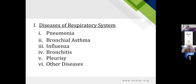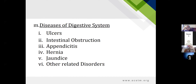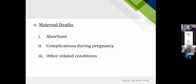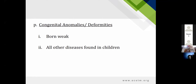In the respiratory system, the most common in the region are pneumonia, bronchial asthma, influenza, bronchitis, pleurisy, and other diseases. In the digestive system: various forms of ulcers, intestinal obstruction, appendicitis, hernia, jaundice, and related disorders. In the urinary system: nephritis, kidney failures, and other urinary diseases. Maternal deaths occur due to abortions or complications during pregnancy and related conditions.